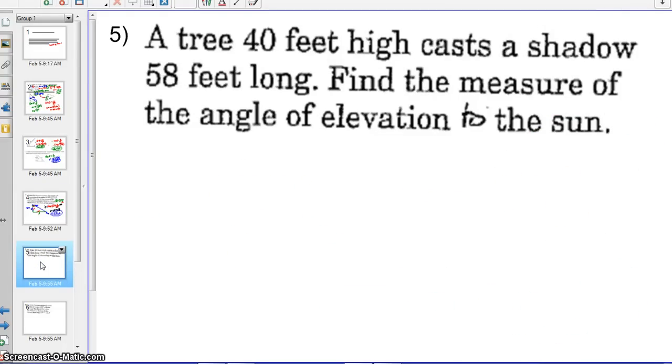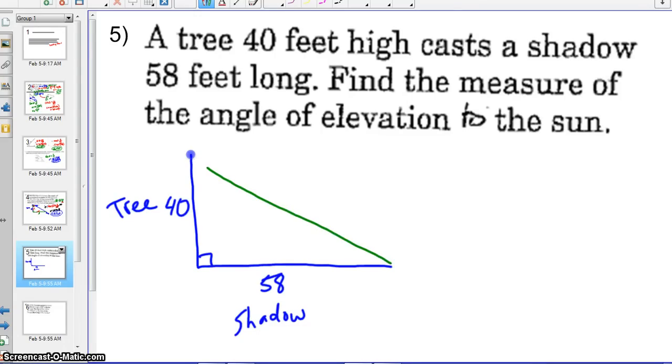Moving on to the next problem. A tree 40 feet high, so you can get creative with your diagrams if you really want to, but I am not very artistic, so we're just going to say that that is a tree, 40 feet tall. The shadow that is cast on the ground is 58 feet. Again, making that assumption. And it says that it wants to know the angle of elevation to the sun, because that's how we are going to get our shadow cast. So it wants to know the angle that is created in order that allows that shadow to be created.